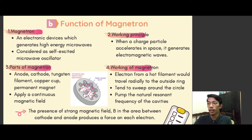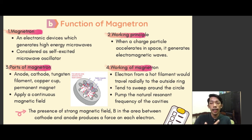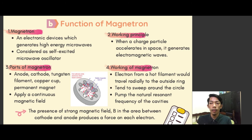The parts inside the magnetron include an anode, cathode, tungsten filament, copper cup, permanent magnet, and a continuously applied magnetic field.